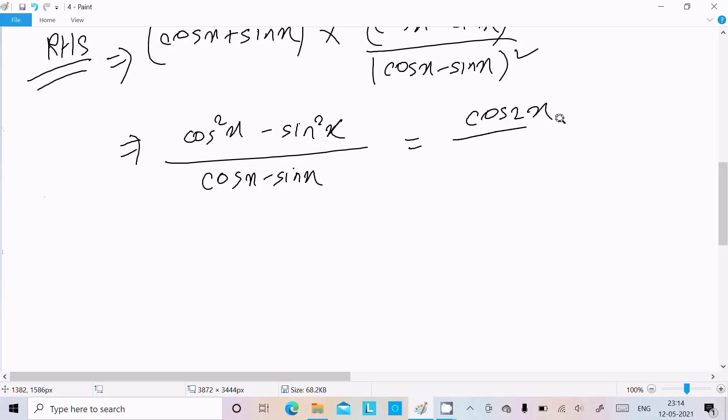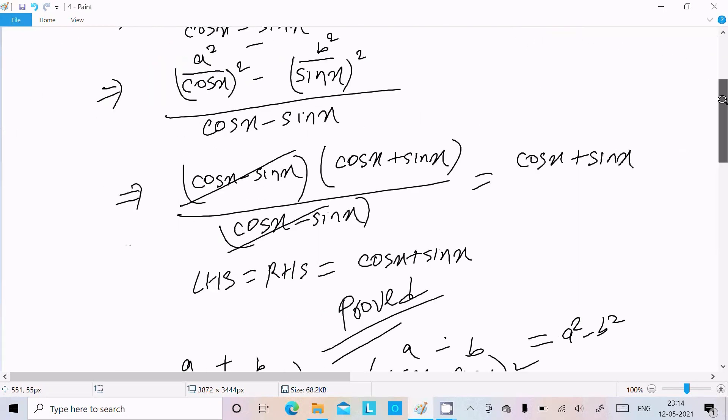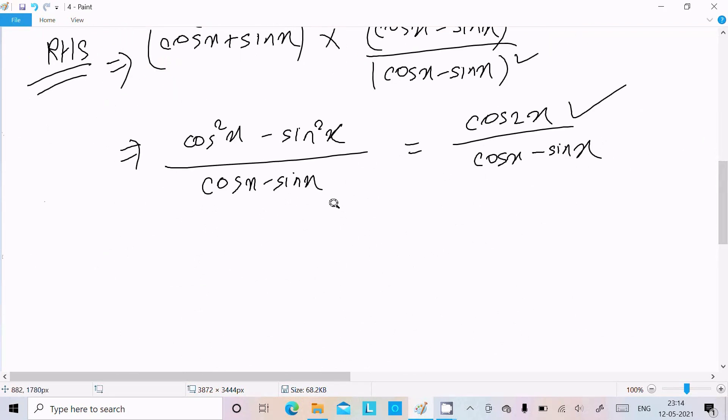And in denominator cosx minus sinx. So on the left hand side cos2x, cosx minus sinx is there. So we can write LHS equal to RHS, it is proved.